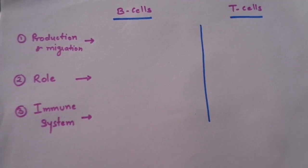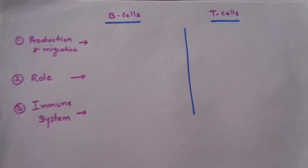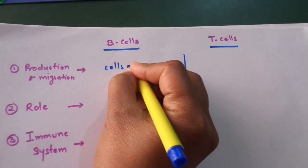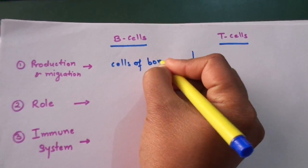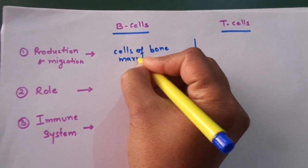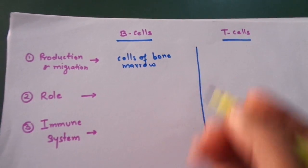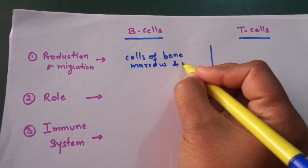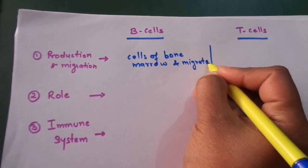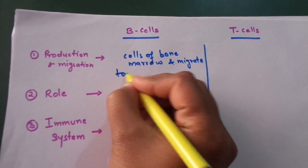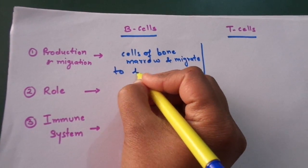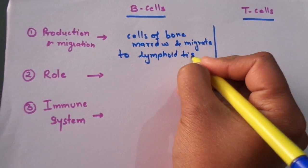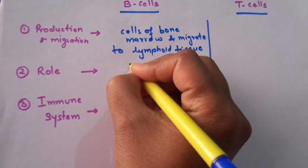The first difference is in production and migration. B cells are produced in cells of bone marrow. They remain there and then later migrate to lymphoid tissues and differentiate there.